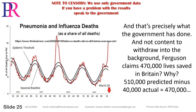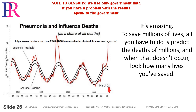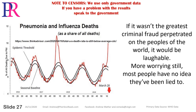And that's precisely what the government has done. Not content to withdraw into the background, Ferguson claims 470,000 lives saved in Britain. Why? His 510,000 predicted minus the 40,000 actual equals 470,000. It's amazing. To save millions of lives, all you have to do is predict the deaths of millions, and when that doesn't occur, look how many lives you've saved. If it wasn't the greatest criminal fraud perpetrated on the peoples of the world, it would be laughable.